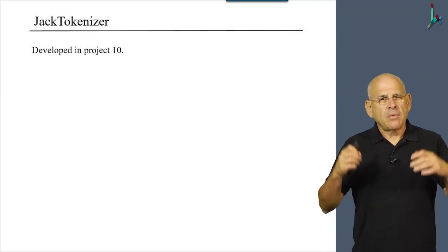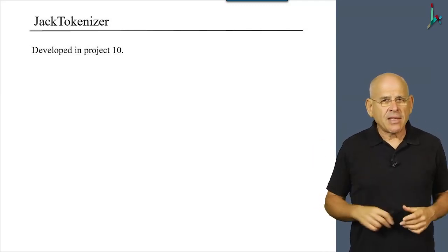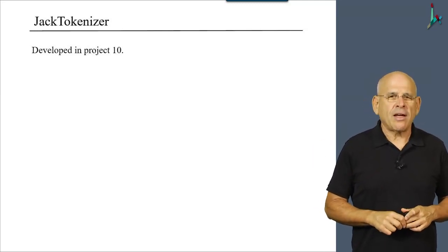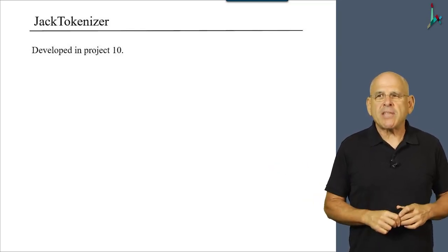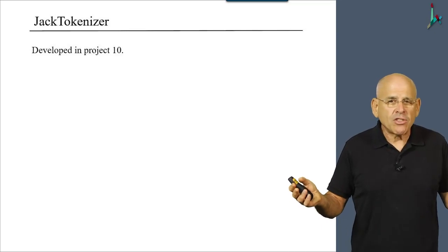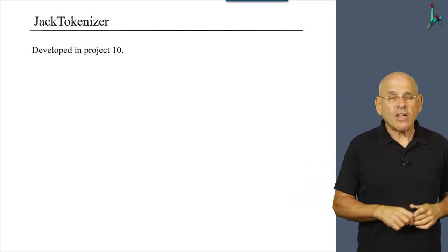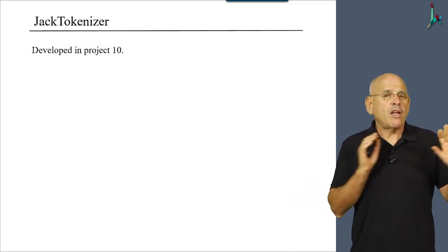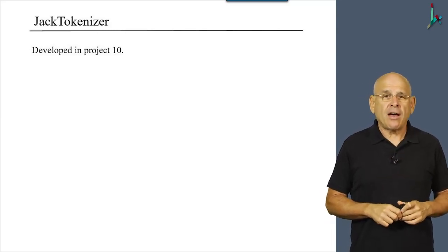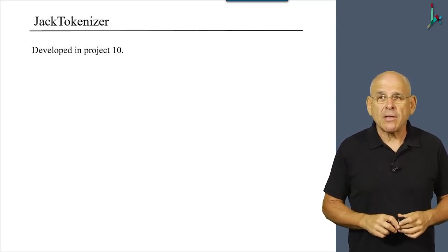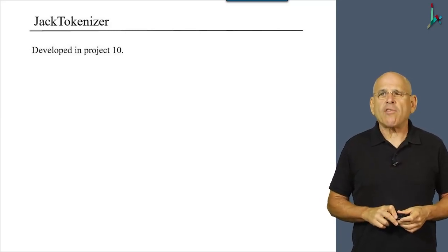All right, now the Jack tokenizer is the next module in the list. And here, I'm happy to say that mission accomplished. We already developed a Jack tokenizer in project 10. We can use it as is. We don't have to touch it for the full scale compiler as well. So this thing has been taken care of.